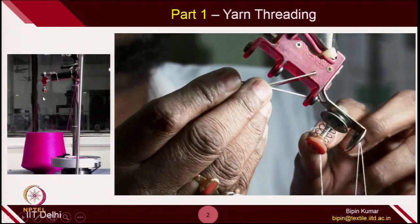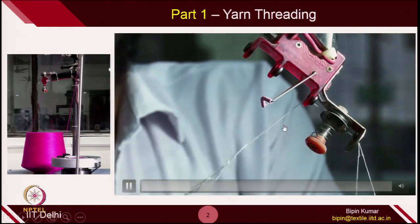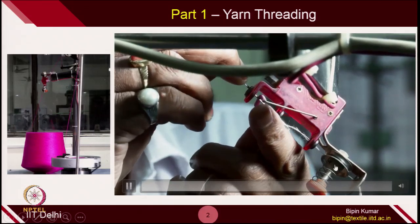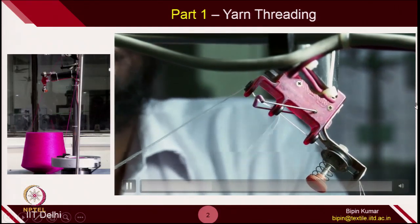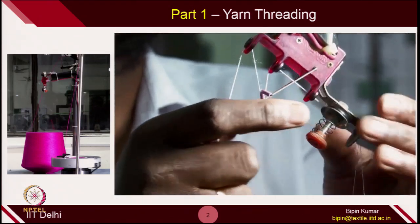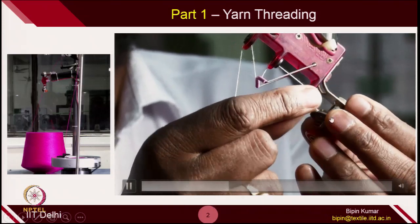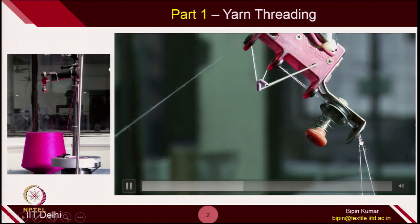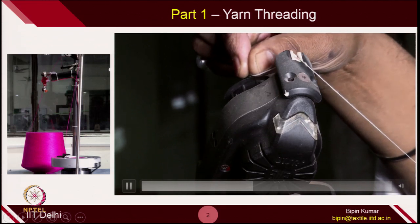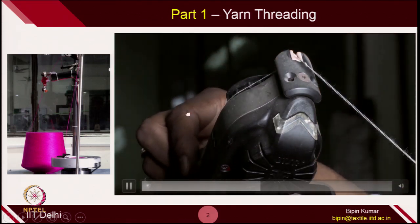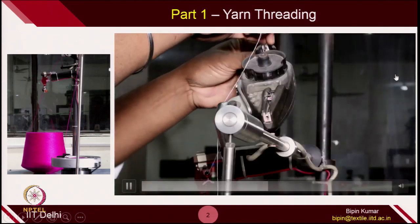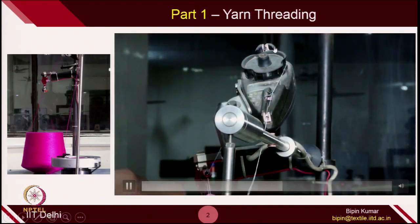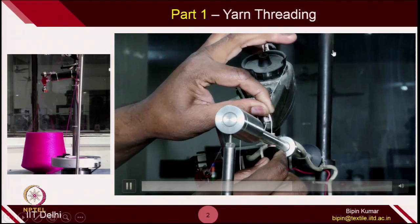We are starting from here — this is the guide. Yarn is first passed through this guide hole, and then through the tensioner system, catching this yarn and passing it through all holes so that the yarn follows a particular path. This is done to avoid ballooning so that there are no yarn breakages and the yarn tension is properly adjusted. The yarn is then passed through a constant speed meter.